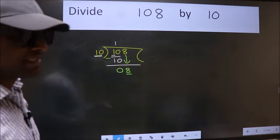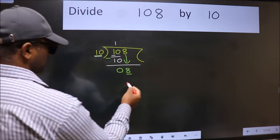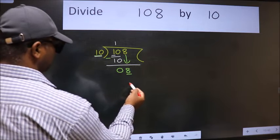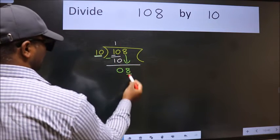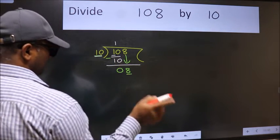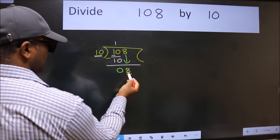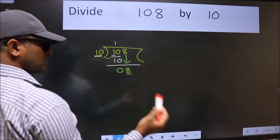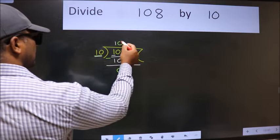what we should think of doing is which number should we write here. If I take 1, we will get 10, but 10 is larger than 8. So what we do is we take 0.